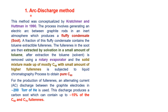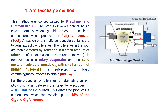The first synthesis method is the arc-discharge method. This method was conceptualized by Krätschmer and Huffman in 1990. The process involves generating an electric arc between graphite rods — cathode and anode — in an inert atmosphere of helium gas. This electric arc generates a fluffy condensate or soot, a fraction of which contains toluene-extractable fullerenes.